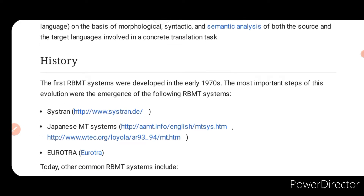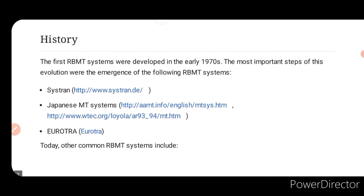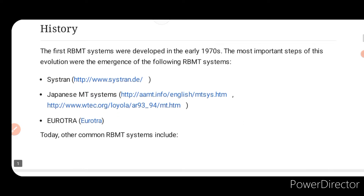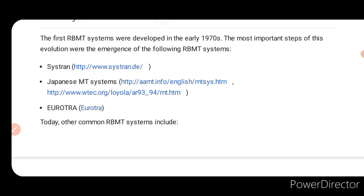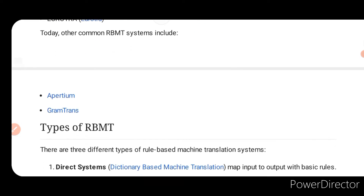The first RBMT system was developed in the early 1970s. The most important steps of this evolution were the emergence of the following RBMT systems: number one, Systran; number two, the Japanese MT system; number three, Eurotra. Today, other common RBMT systems include Apertium and GramTrans.